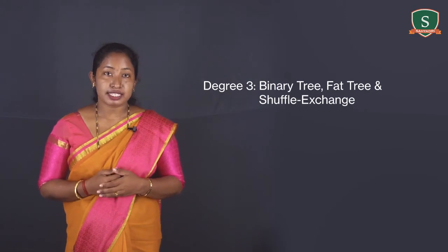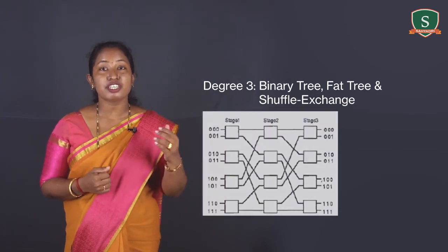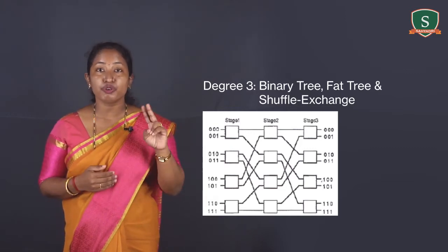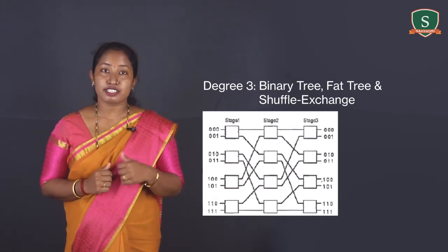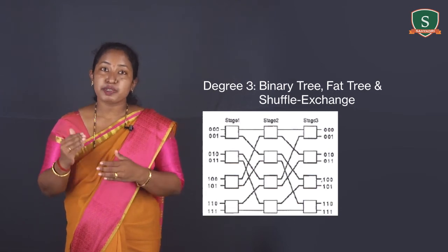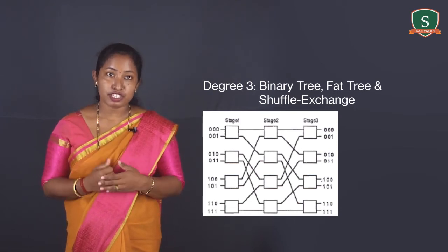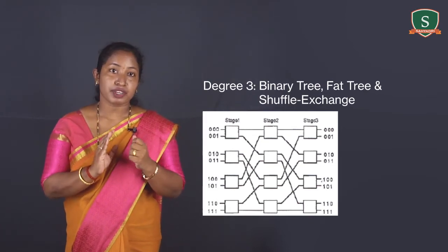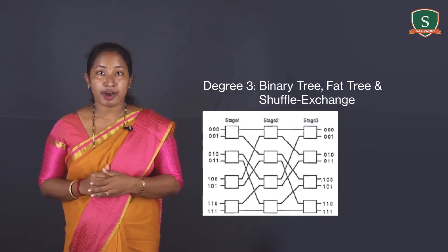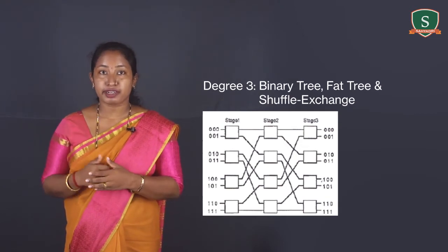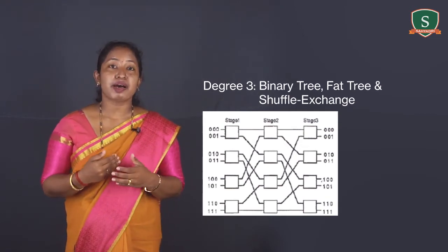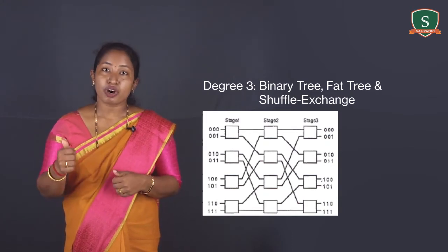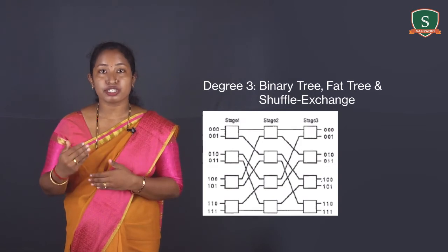Another method for establishing a network is the shuffle exchange connection. The shuffle exchange network is a combination of two functions: shuffle and exchange. Each is a simple bijection function in which each input is mapped onto one and only one output. The shuffle exchange network provides suitable interconnection patterns for implementing certain parallel algorithms such as polynomial evaluation, fast Fourier transform, sorting and matrix transposition, etc.